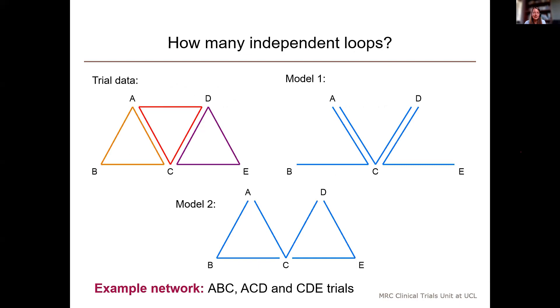So, if I go back to our example, the second example, in the second example, model one needs a heterogeneity parameter to model the variation between trials on the AC contrast and the D versus C contrast because both of those contrasts are informed by more than one trial. But it doesn't need any inconsistency parameters because there are no loops in the network. On the other hand, in model two, we need two inconsistency parameters because we've parameterized the trials in such a way that we've created two loops. But we don't need any heterogeneity parameters because all of the contrasts are informed only by one trial. So, we don't have to model between-trial heterogeneity.